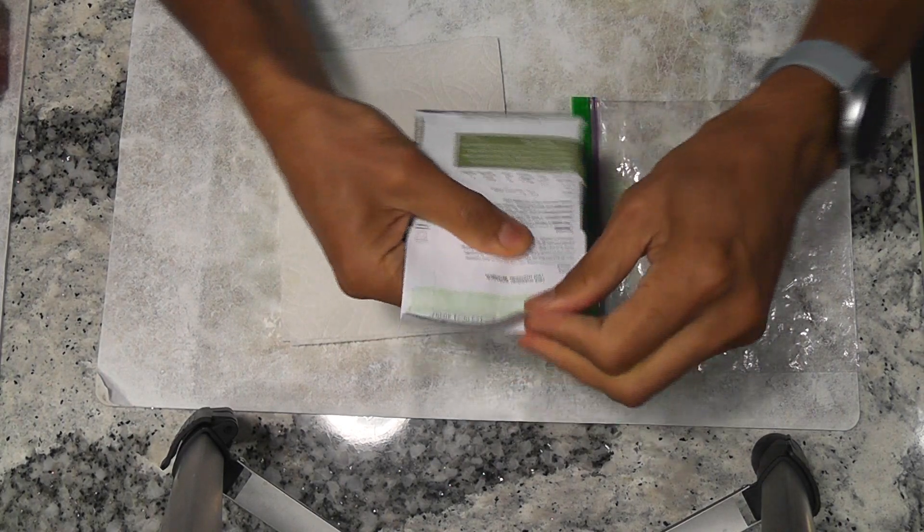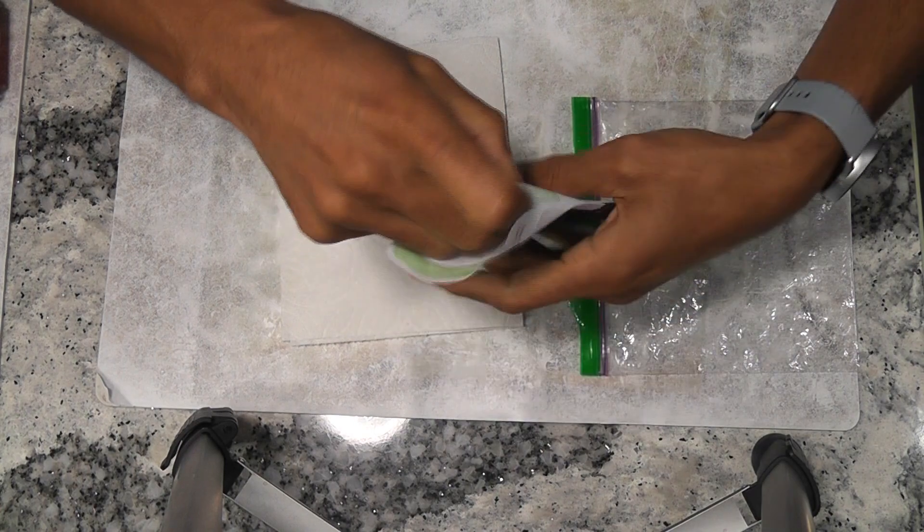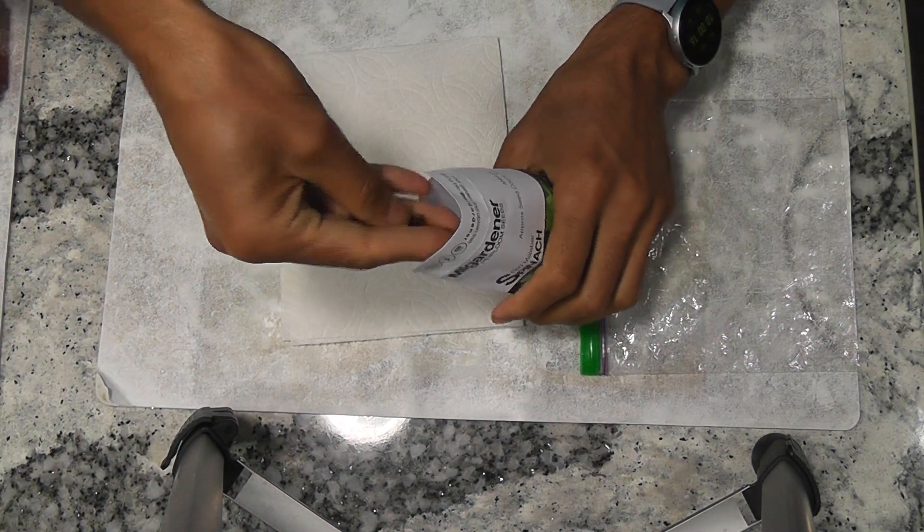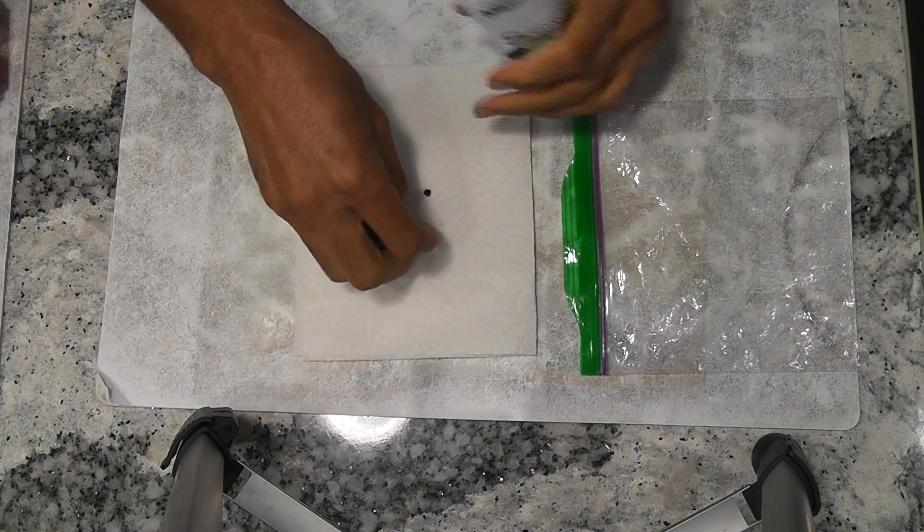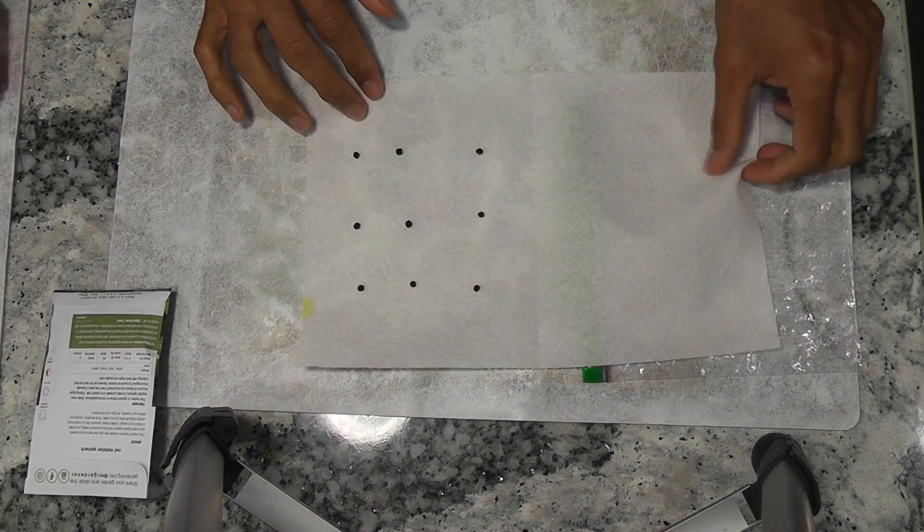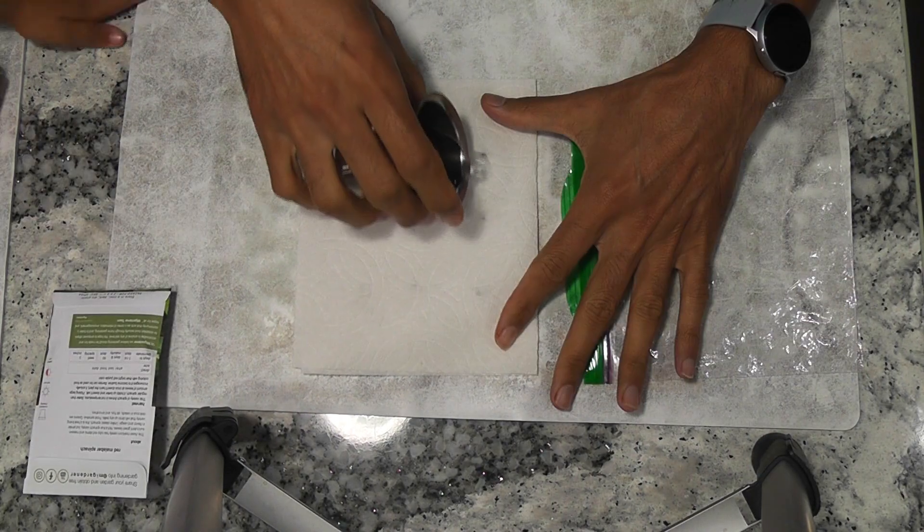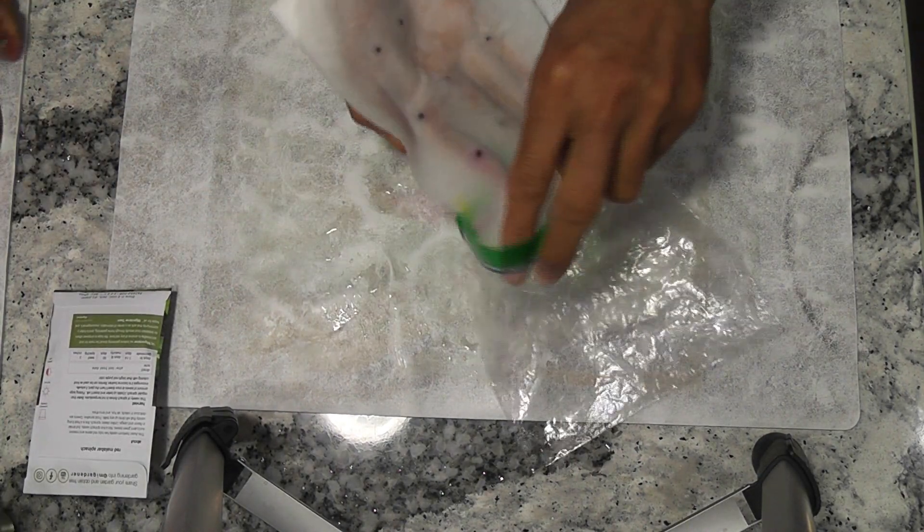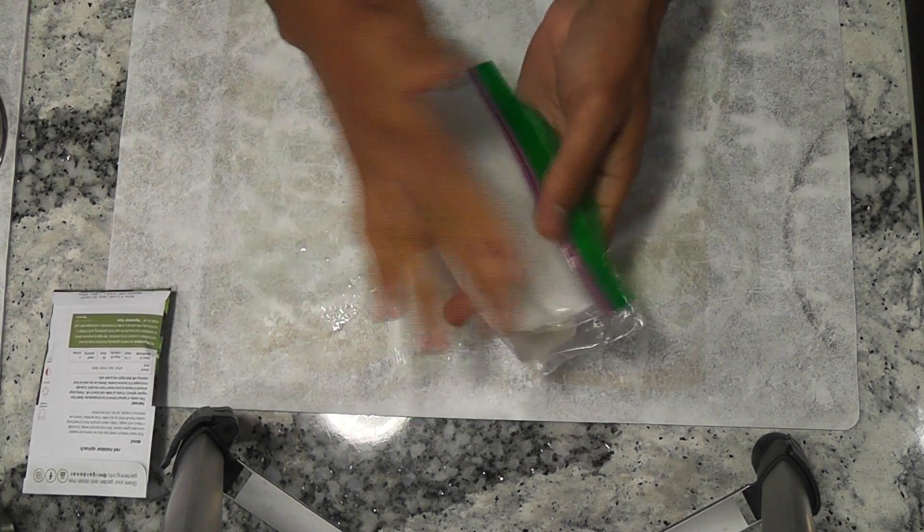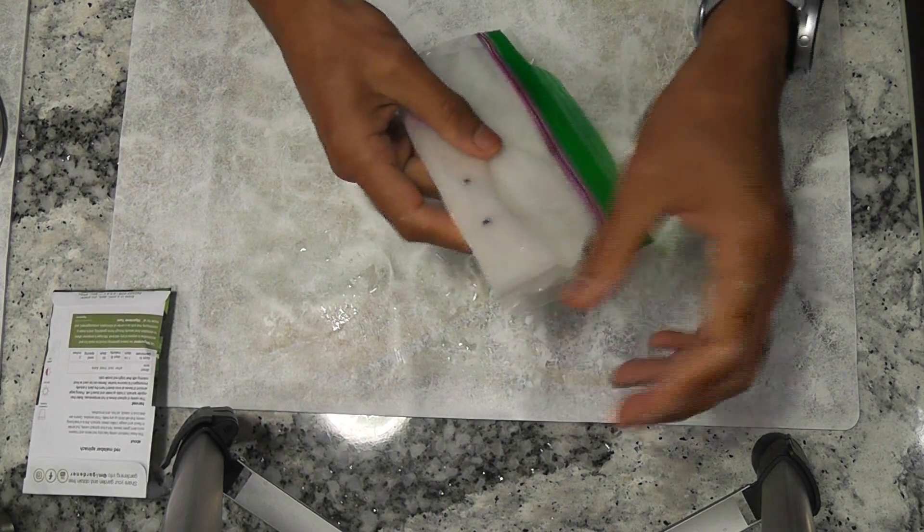Like any spinach, germination is tricky for Malabar Spinach as well. So I will start with germinating the seeds using paper towel method. I am simply placing a couple of seeds on a paper towel, fold it, wet the paper towel, place it in a ziploc bag, keep it in a dark and warm place and check the progress every 3 to 4 days.